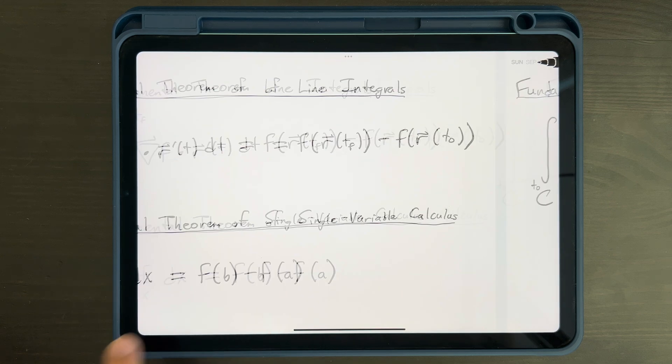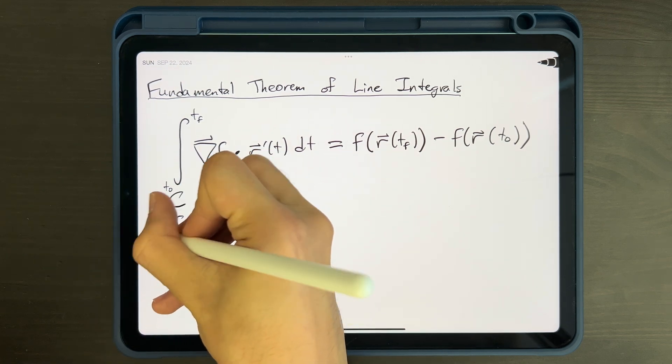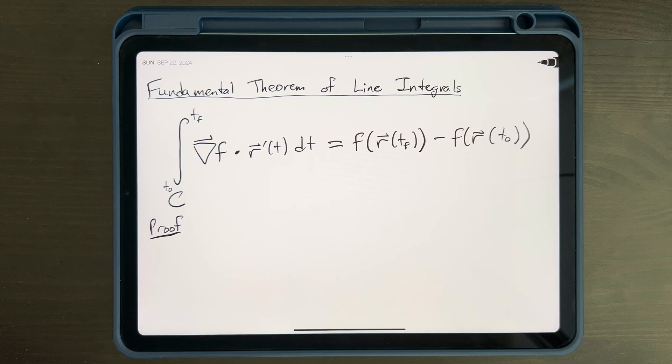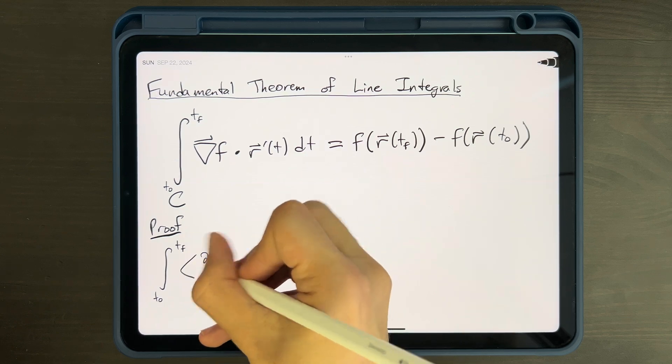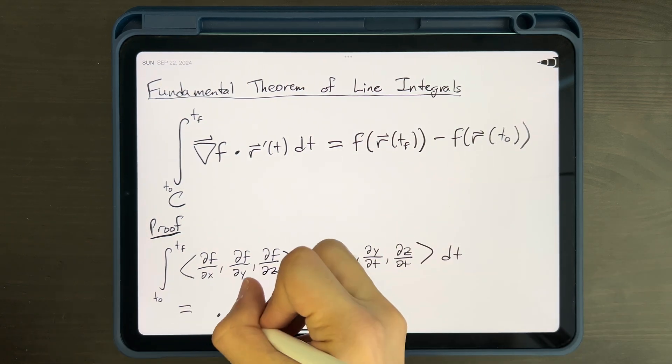The last step to sum this video up would be to formally prove the fundamental theorem of line integrals. And that, I'll leave to you guys to try for yourselves. It's actually a relatively simple proof. You can start by expanding the gradient into its i-hat, j-hat, and k-hat components. I'll leave the rest to you.